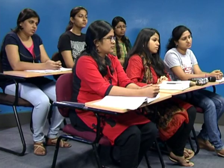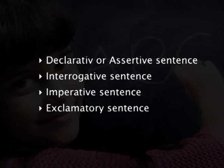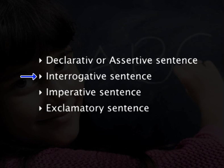What do you mean by a sentence? A sentence is a group of words which makes complete sense. For example: 'she likes ice cream'. Now let us look at types of sentences. There are four types of sentences: declarative or assertive sentence, interrogative sentence, imperative sentence, and exclamatory sentence.